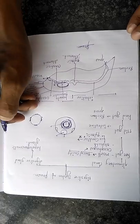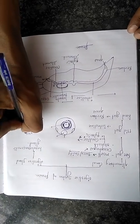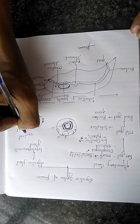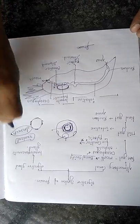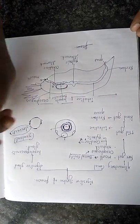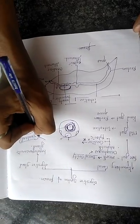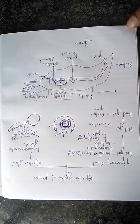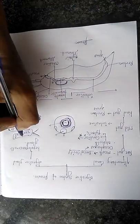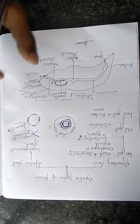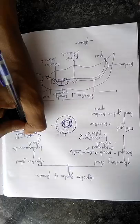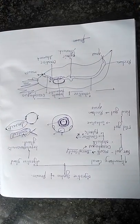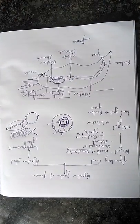The pyloric stomach is divided into two chambers: the ventral chamber and the dorsal chamber. The ventral chamber is the larger part and the dorsal chamber is the smaller part. The ventral chamber receives secretions from the hepatopancreatic ducts, and digestion is completed in the ventral chamber.